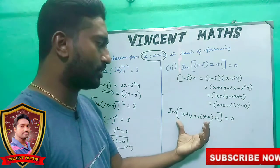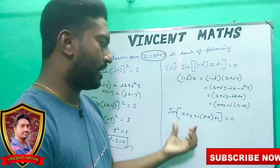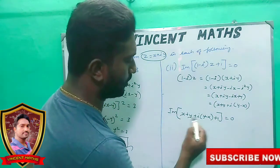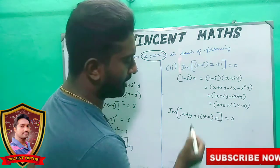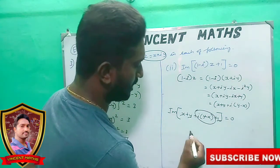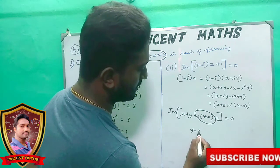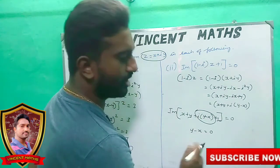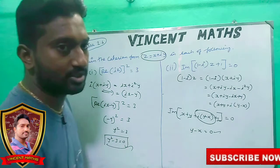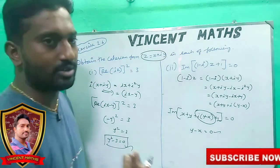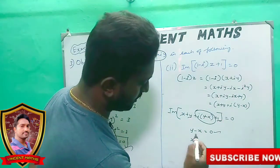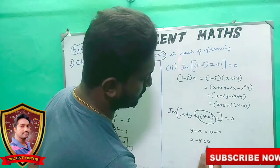Now we will find the imaginary part. What is the imaginary part? x and y are real, so the imaginary coefficient is (y minus x). Setting the imaginary part equal to zero: y minus x equals 0. So x minus y equals 0, meaning x equals y.